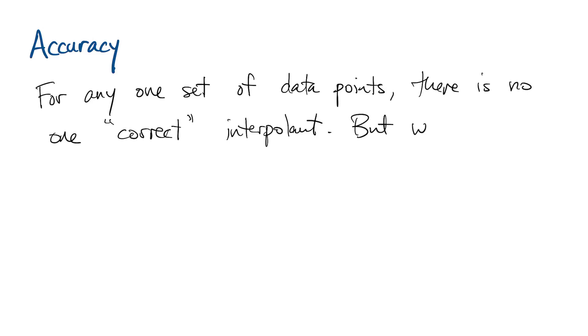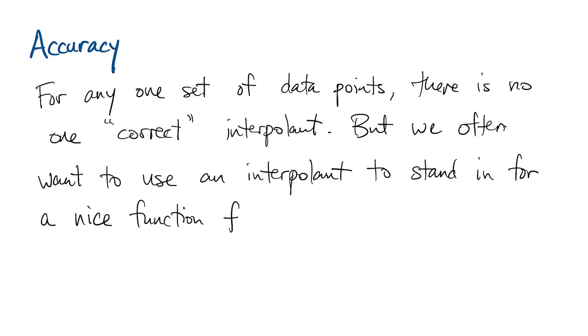The notion of accuracy is a little subtle here. For one given set of nodes and values, there's no inherently one right way to interpolate them, so we need some context. One of the things that we'll be doing a lot with interpolants is using them as substitutes for other functions that we know only by their values. So in other words, let's suppose there's an underlying nice function, f, that provides the yk values for us.